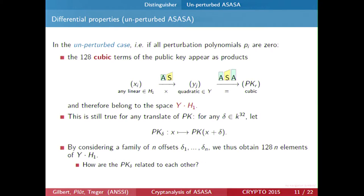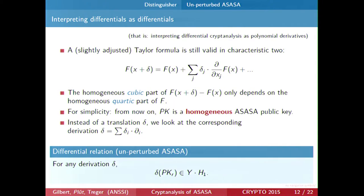It looks like we could obtain the whole space just by taking enough differentials, but actually these terms are related to each other very simply. The differentials in differential cryptanalysis meaning are actually differentials as in polynomial differentials, and this is because of the Taylor formula. The Taylor formula is still almost valid in characteristic two — we can do some slight adaptations to cancel the denominators, but mainly we are concerned about the first term, which needs no adaptation.